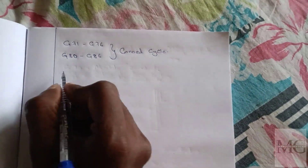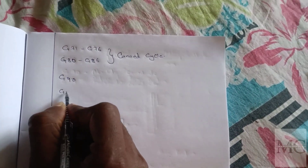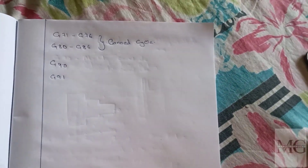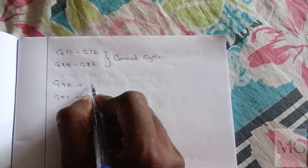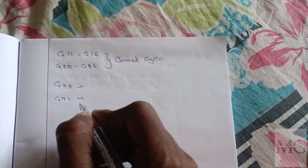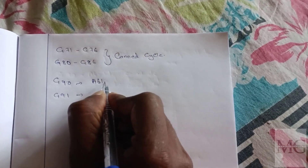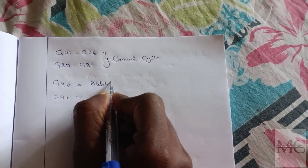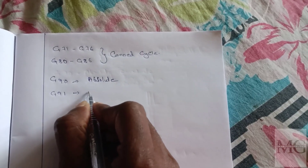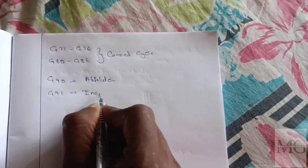Next are G90 and G91. G90 is absolute programming and G91 is incremental programming.